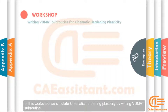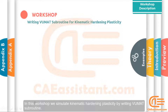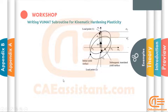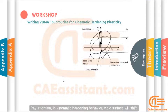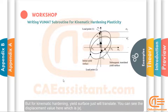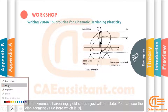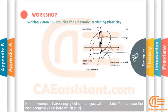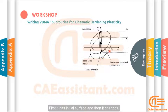Hello guys! In this workshop, we simulate kinematic hardening plasticity by writing the UMAT subroutine. Pay attention: in kinematic hardening behavior, your yield surface will shift. In isotropic hardening, the yield surface will be larger, but for kinematic hardening, the yield surface just will translate. You can see the displacement value here, which is X. First, it has an initial surface and then it changes.